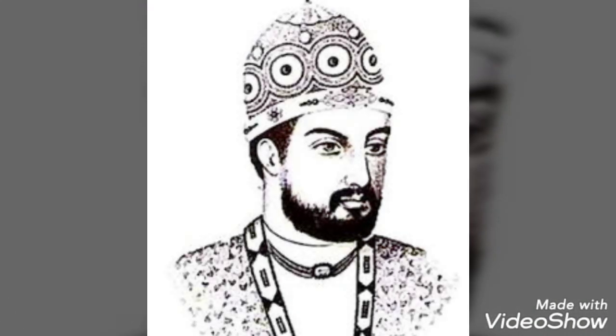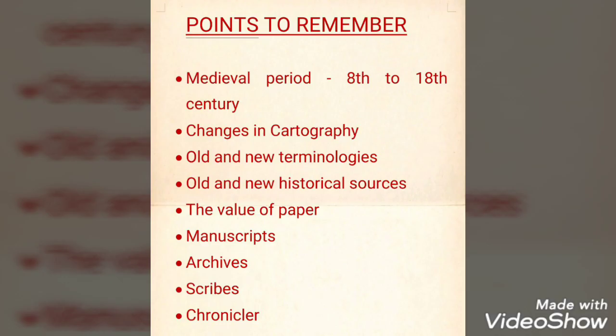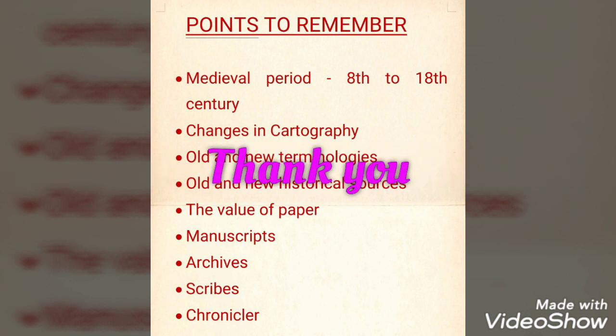So that is all for today's session. Let us remember what we discussed: the medieval period from the 8th to 18th century, changes in cartography, old and new terminologies, and old and new historical sources. We also discussed the value of paper, manuscripts, archives, scribes, and chroniclers. We will continue the chapter in the next session. Till then, go through the chapter, read it very well, and try to find out questions from it. Goodbye and thank you.